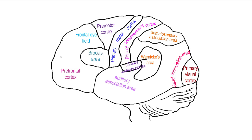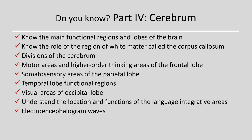To review: you should know the main functional regions and lobes of the brain, the role of the white matter and corpus callosum, and the divisions of the cerebrum. This includes motor areas and higher order thinking areas of the frontal lobe, somatosensory areas of the parietal lobe, temporal lobe functions and regions, visual areas of the occipital lobe, and the location and functions of the language integrative areas including Broca's and Wernicke's areas.